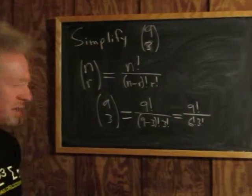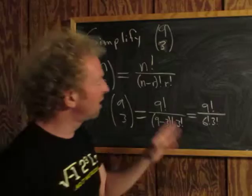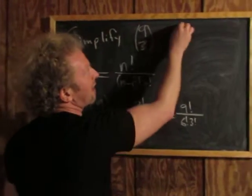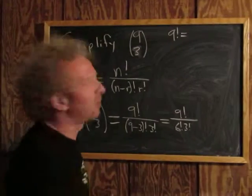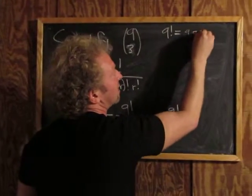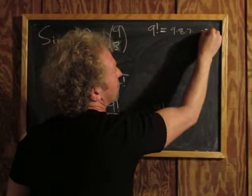Now we have to clean this up. You can take a couple shortcuts. First, 9 factorial is 9 times 8 times 7 times 6 times 5 times 4 times 3 times 2 times 1.